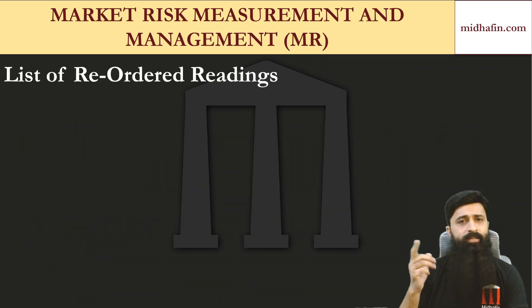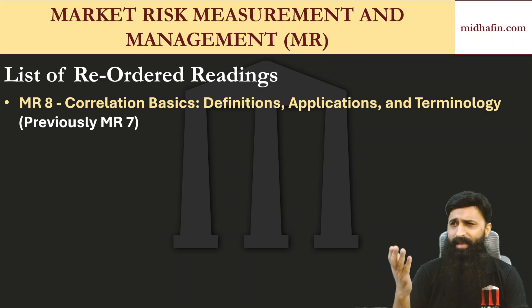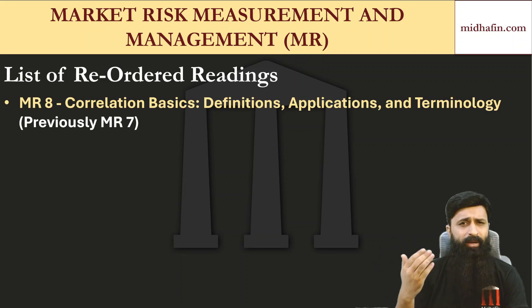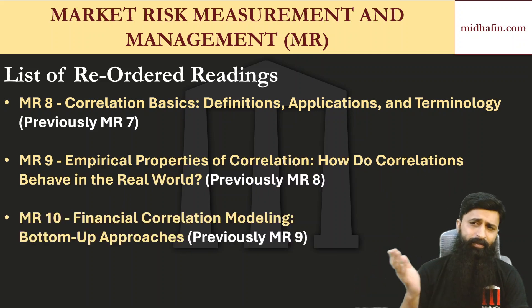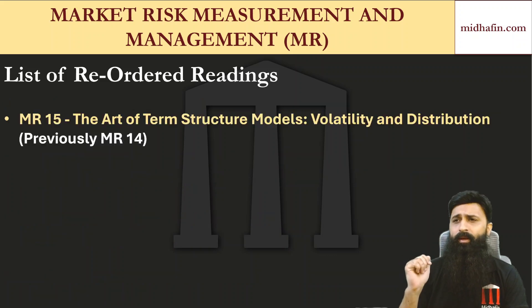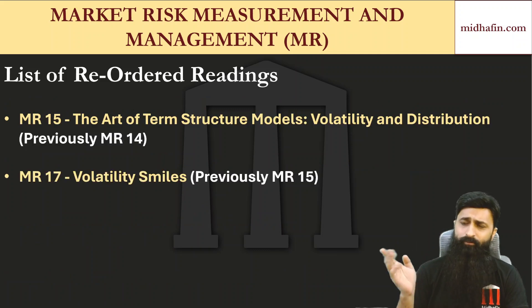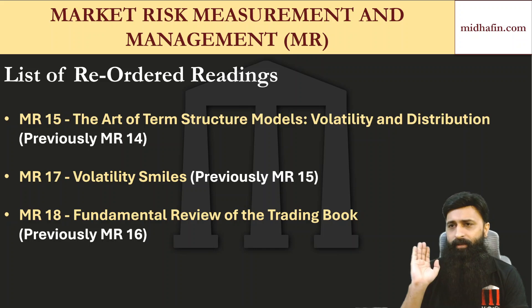Regarding the reordered readings, the chapter names remain the same — only their numbering has shifted. MR7 (Correlation Basics: Definitions, Applications and Terminologies) has become MR8. MR8 has been pushed to MR9, MR9 has become MR10, MR13 has become MR14, MR14 has become MR15, MR15 (Volatility Smiles) has become MR17, and MR16 (Fundamental Review of the Trading Book) has now become MR18.